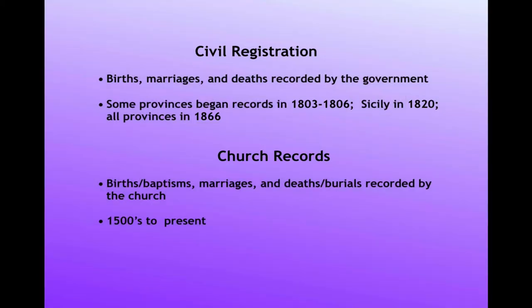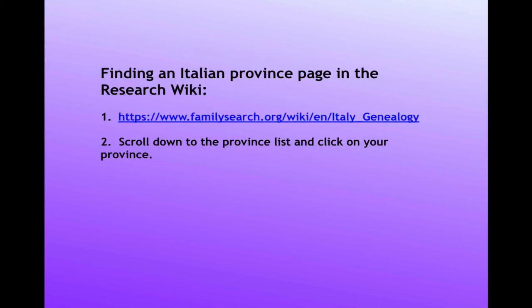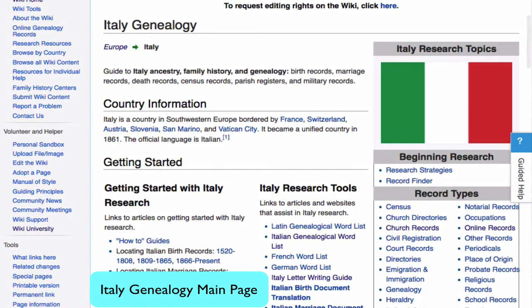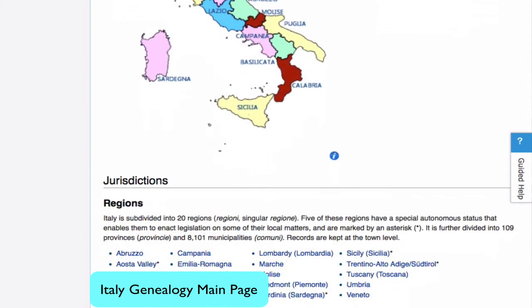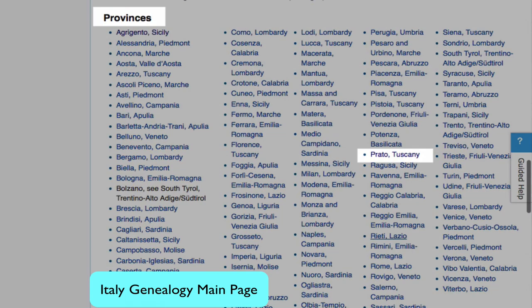Before civil registration starts in that area, you will only have church records to work with. You will find the province page that you need by going to a URL that takes you directly to the Italy genealogy page, then scroll down and find your province. The URL will be listed in the notes below the video. Here is the Italy genealogy main page, and I'm going to choose the province of Prato.